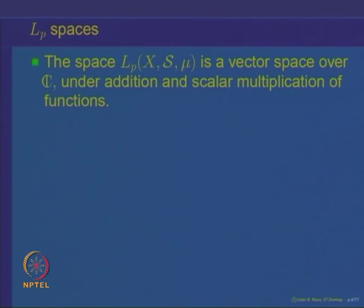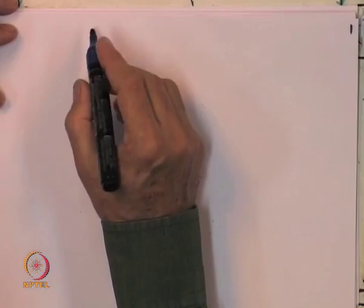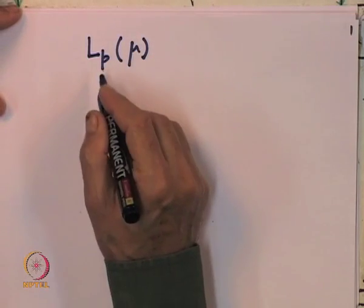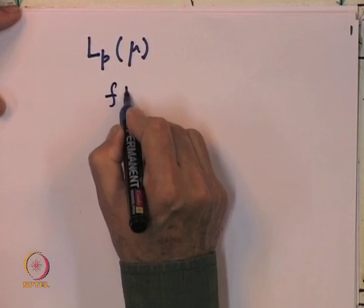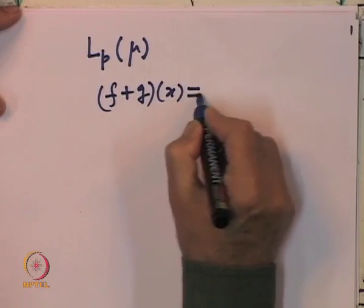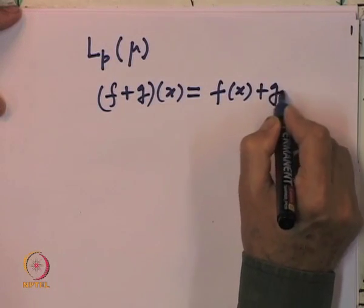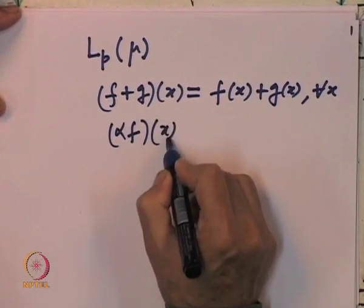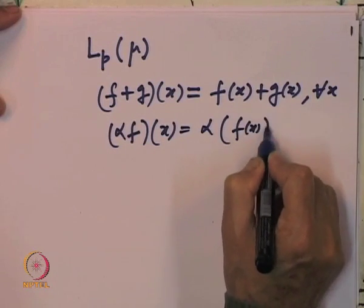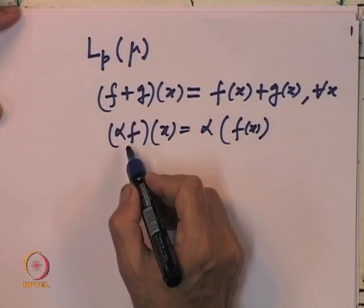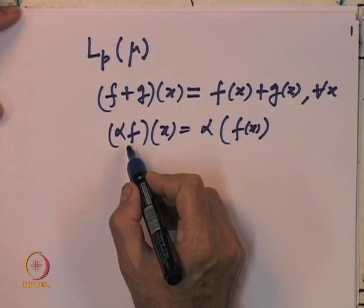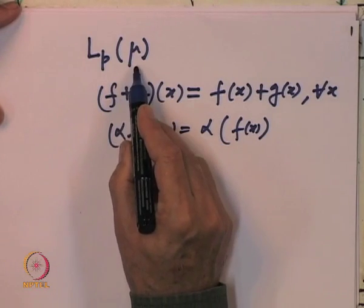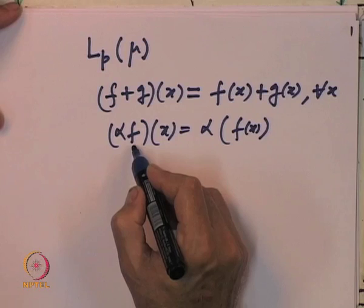Let us observe how that is done. We have L^P(μ), the space of all P-th power integrable functions. We want to show that if we define (F+G)(x) = F(x) + G(x) for every x, and (αF)(x) = α·F(x), then under these operations of addition and scalar multiplication, L^P(μ) is a vector space. For that we will need to show that α·F is a function in L^P(μ) whenever F is in L^P(μ).